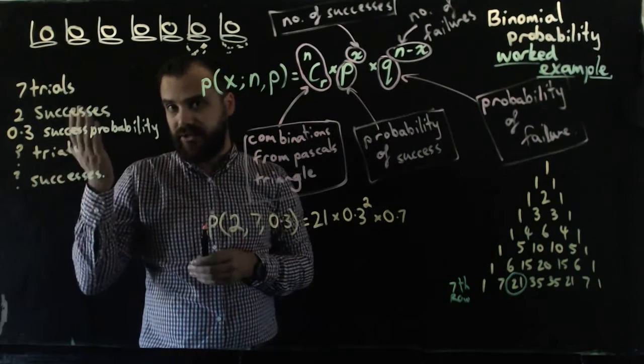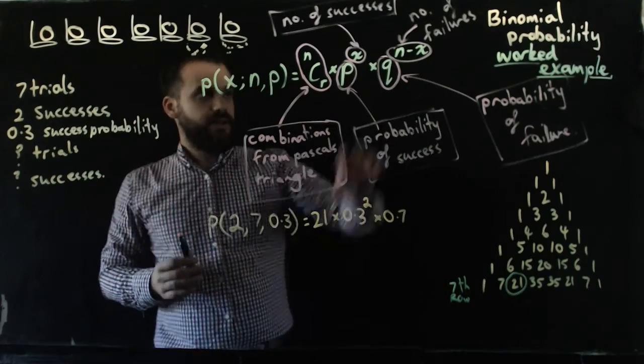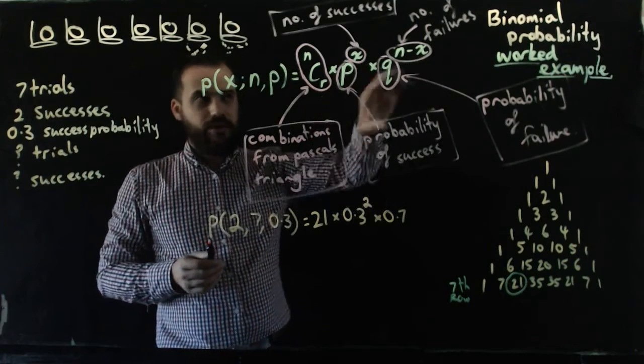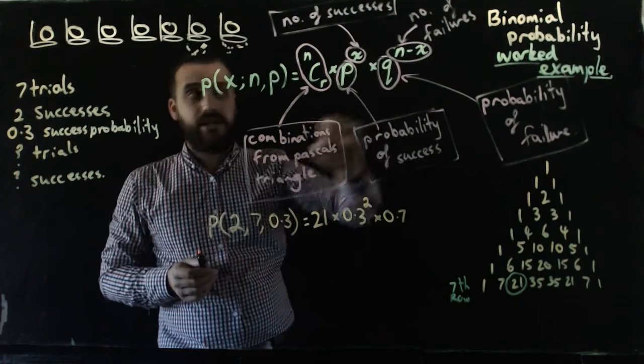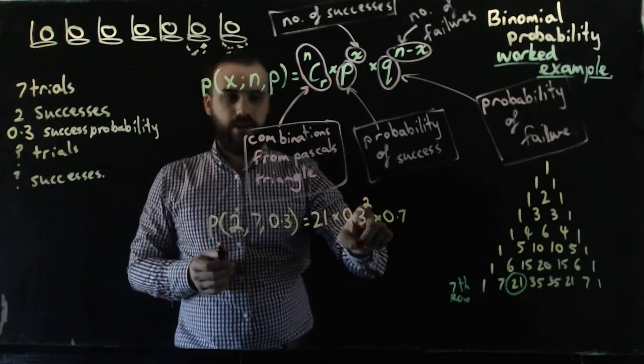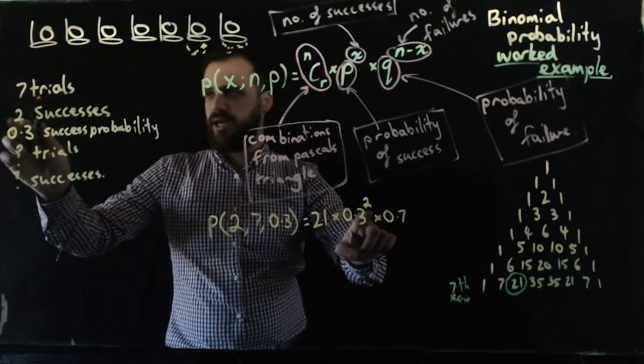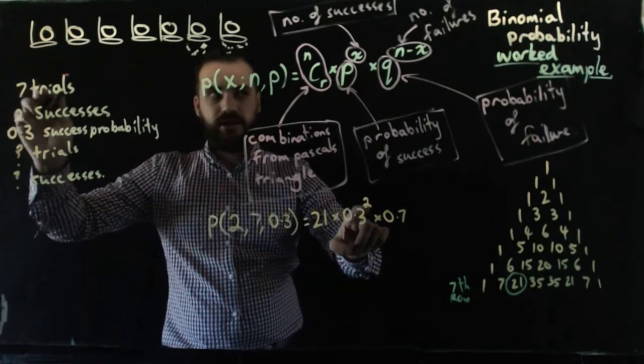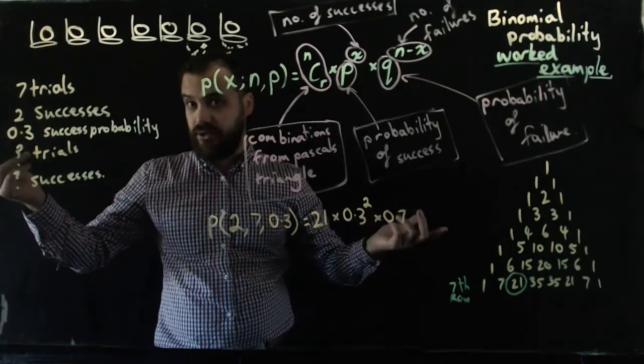Finally, n minus x. Don't worry about n minus x, what it means is number of failures. And the number of failures is going to be—well, if you have two successes and you have seven trials, then the number of failures is going to be seven minus two, five.